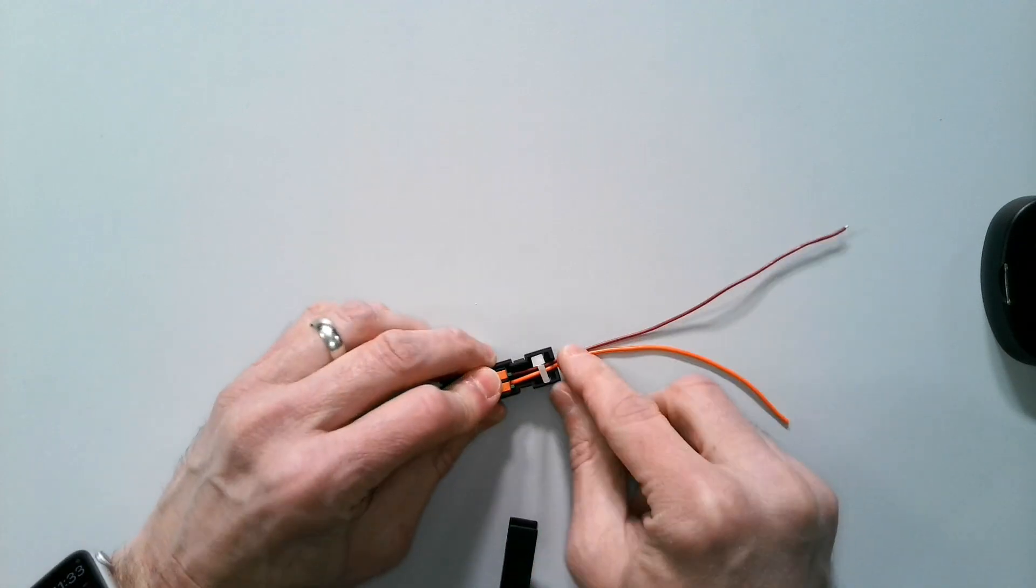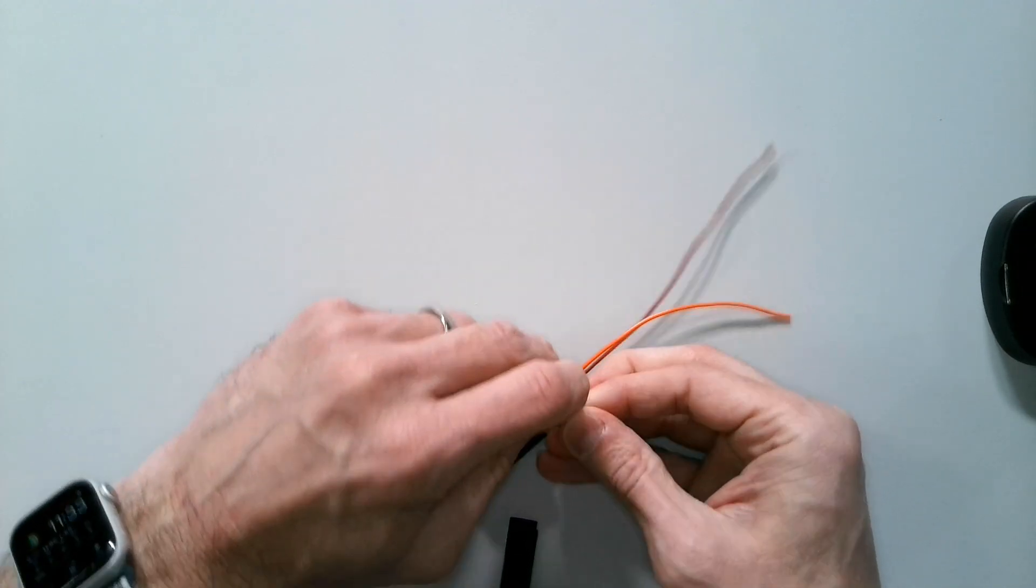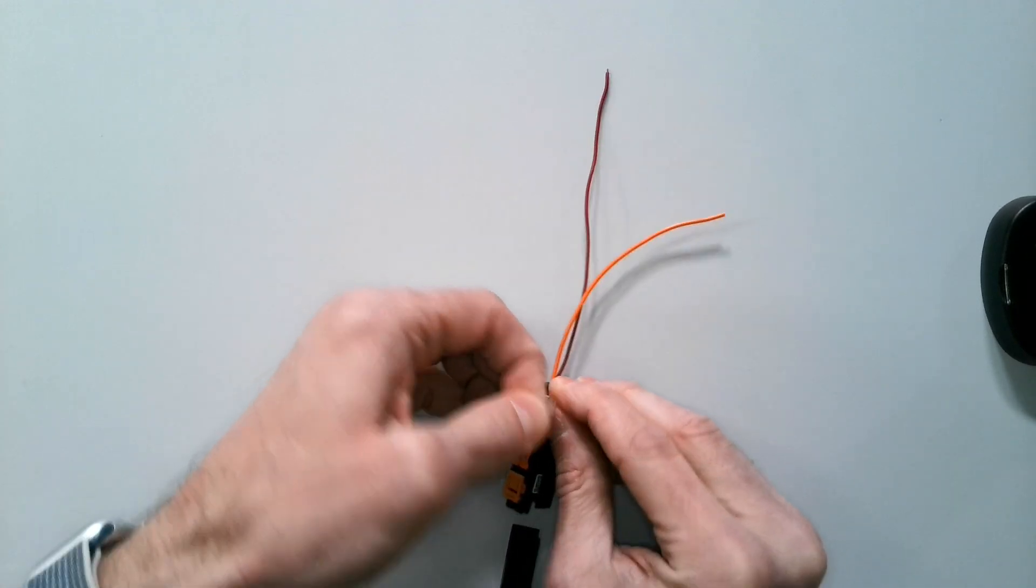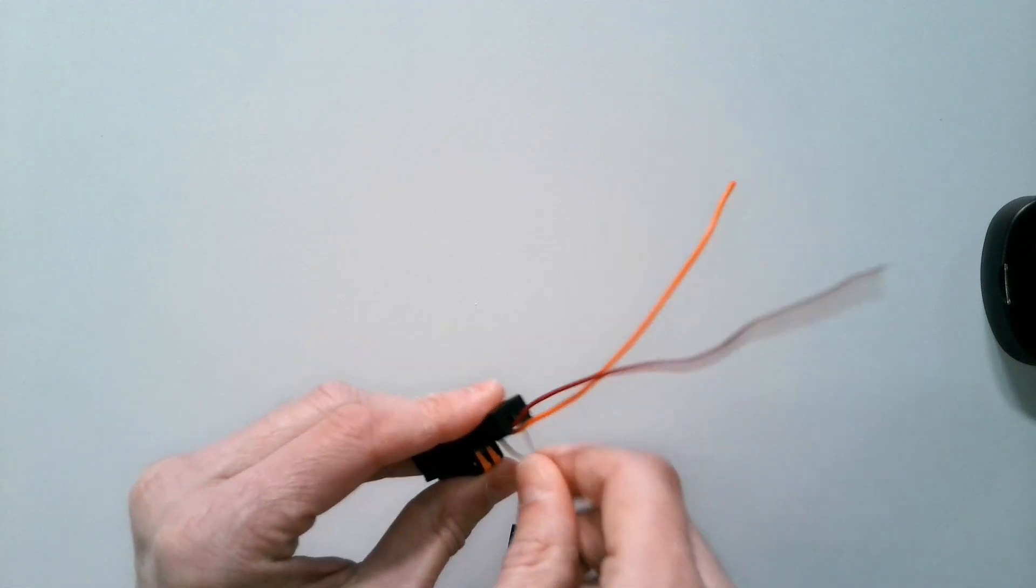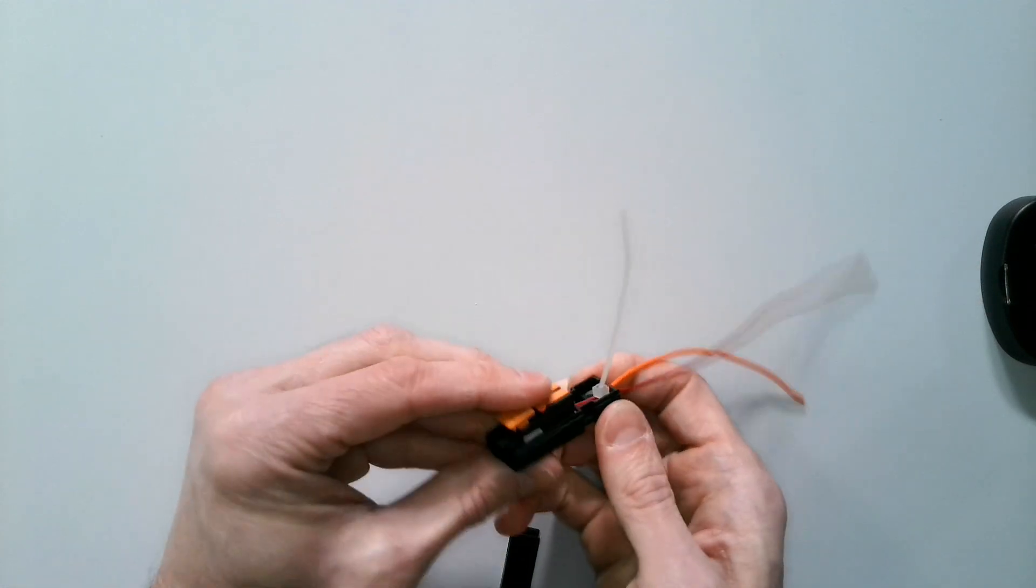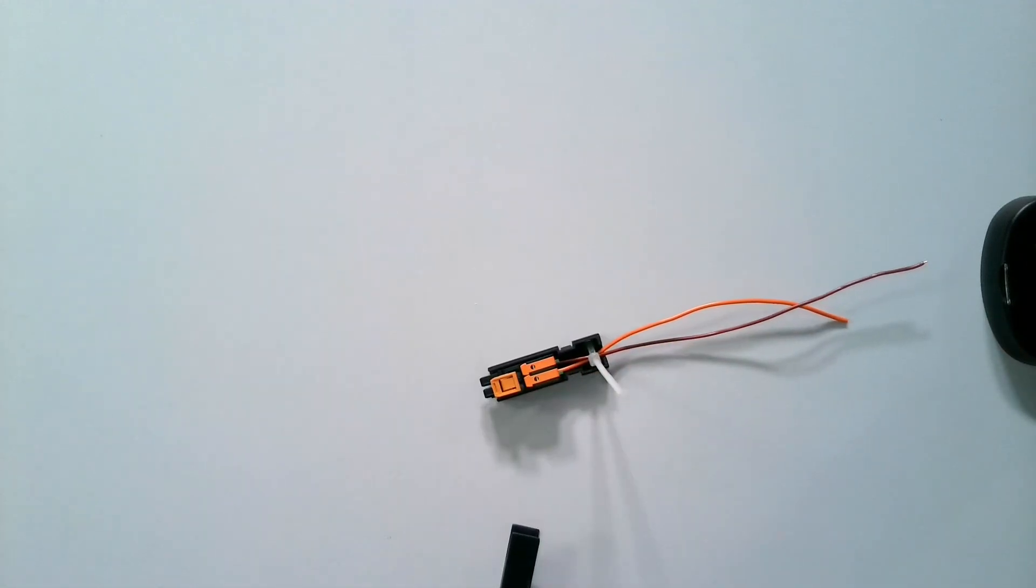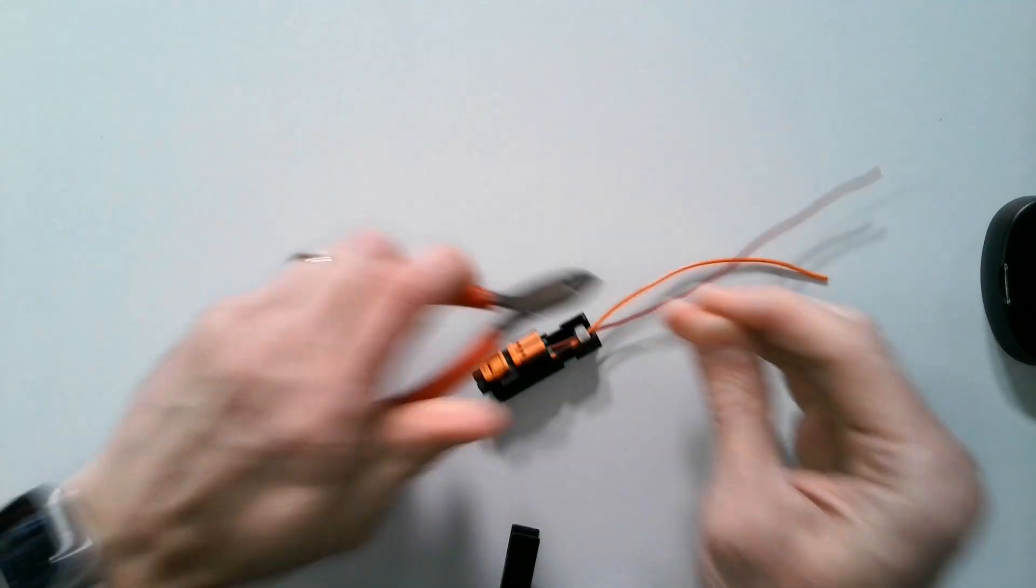Sort the zip tie and I'm going to kind of work it through. There we go. All right so now that is zipped in there and I'm going to take some little snips, cut that off.